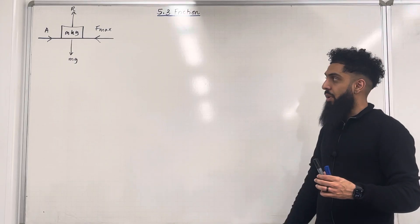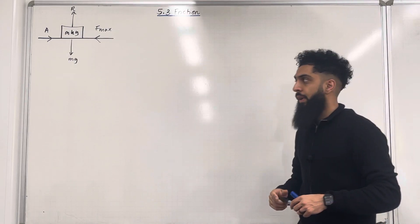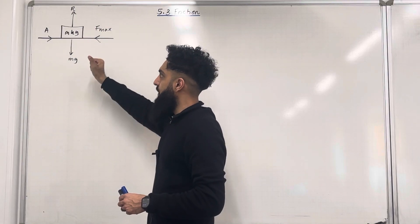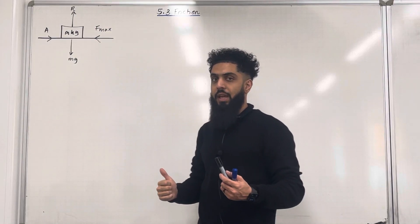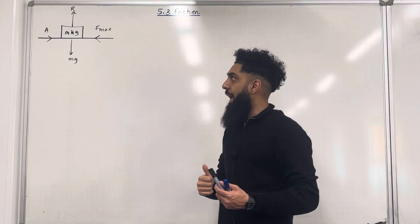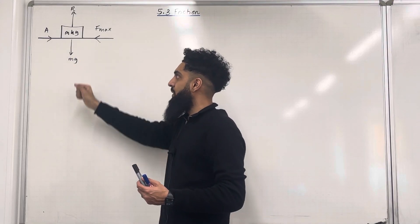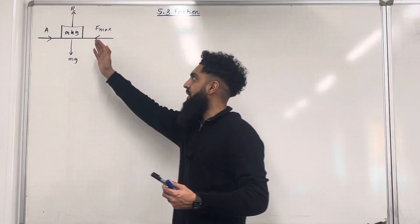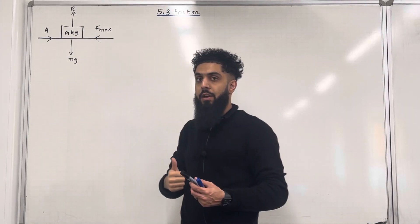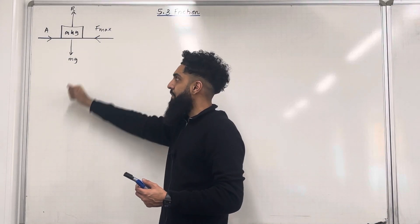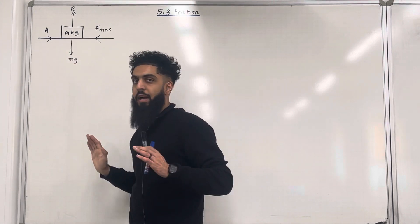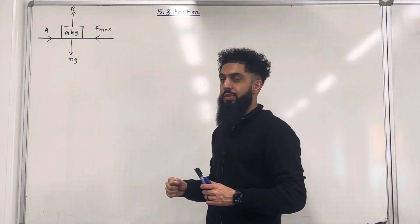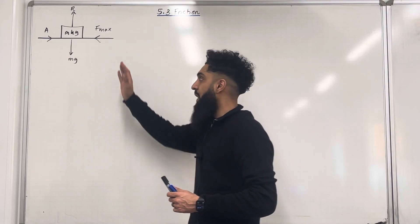I'm going to start this teaching video by going through this diagram. So what we have is a rough surface with a box on it. The mass of the box is m kg, hence the weight will be mg acting vertically downwards. Because that box is in contact with the surface, there will be a normal reaction acting vertically upwards, perpendicular to the contact surface. Suppose A is the applied force on the box. Because the surface is rough, there will be a frictional force acting in the opposite direction.